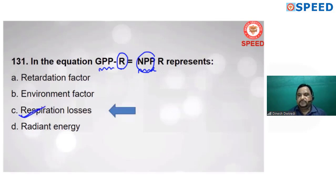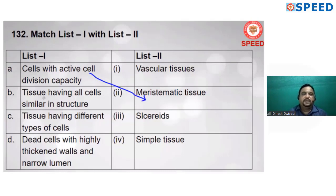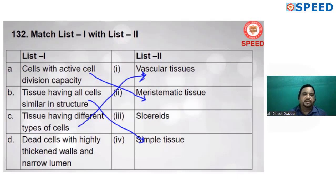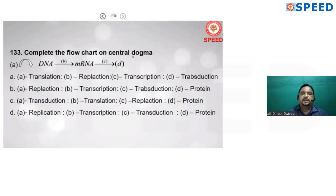Match the following: cells with active cell division capacity correspond to meristematic cells or meristematic tissue. Tissue having all cells similar in structure is known as simple tissue. Tissue having different types of cells is known as complex tissue, such as sclerenchyma. Answer 4 is correct.